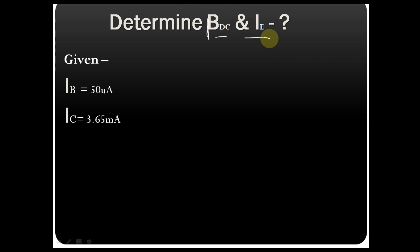Our objective is to determine the value of beta DC and IE of a transistor. Given IB equals 50 microamperes and IC equals 3.65 milliamperes, you have to find beta DC and IE.